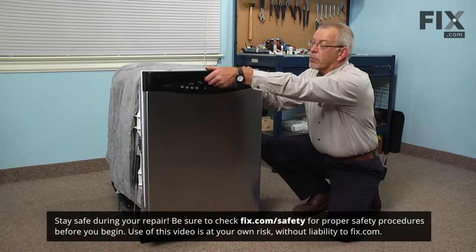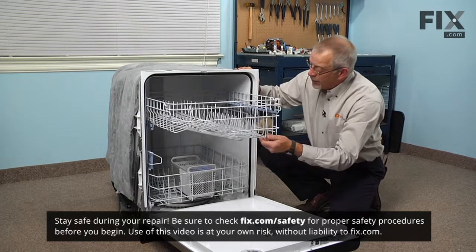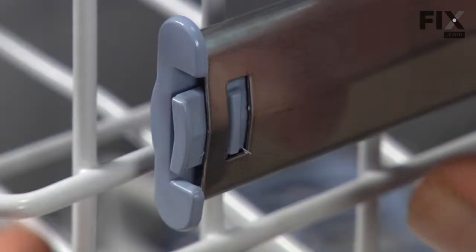Now to do this repair we'll start by opening the dishwasher door, open it fully, and then we'll pull the rack out enough that it will extend the rails.